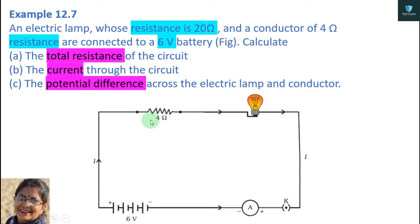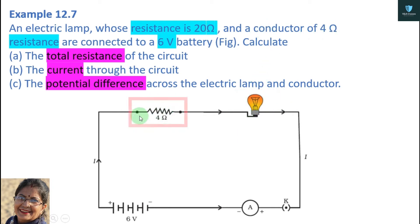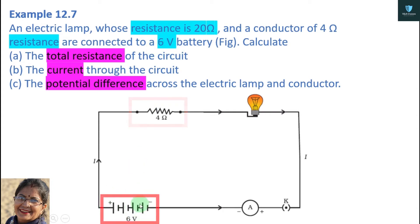This is the 4 ohm resistance. Here is the bulb — and what is inside the bulb? It is a filament, and the filament has resistance. This is the resistance. An electric lamp whose resistance is 20 ohm, and a conductor of 4 ohm, are connected to a 6 volt battery. Here you can see 3 cells — 1, 2, and 3 — making 1 battery with a value of 6 volts.